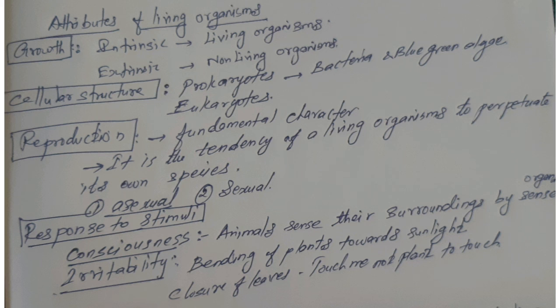We are going to see about reproduction. Reproduction is one of the fundamental characters of all living organisms. Without reproduction, no species can exist in this world. It is the tendency of a living organism to perpetuate its own species. There are two different types: asexual reproduction and sexual reproduction. In asexual reproduction, there is no involvement of male and female gametes.